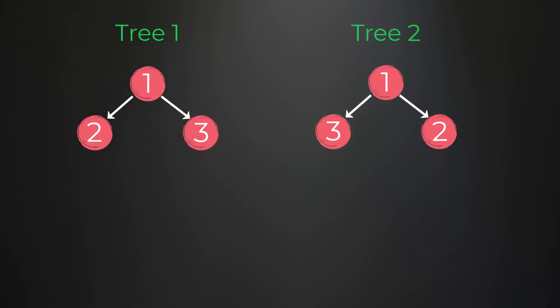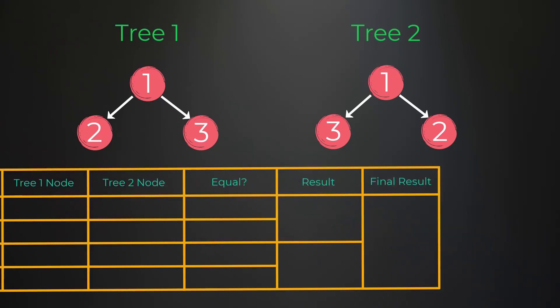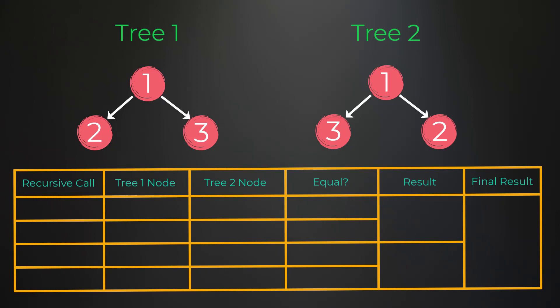Now that we understand exactly what the problem is asking us to do let's go over the algorithm. Going back to the simple example, we start at node 1 for each tree and they are equal, so that means we need to check if the subtrees under node 1 are equal as well. In total we're going to make four recursive calls at most for every single node to determine if the subtrees are equal. In order for subtrees to be equal the left children and right children need to be the same. If we look at the left children they are not the same, so this recursive call will return false. If we look at the right children they are also not the same, so we return false there.